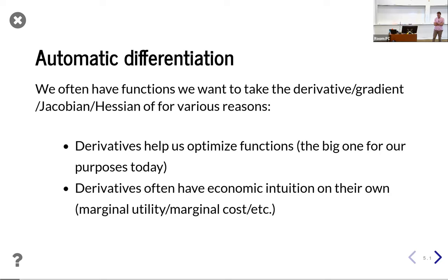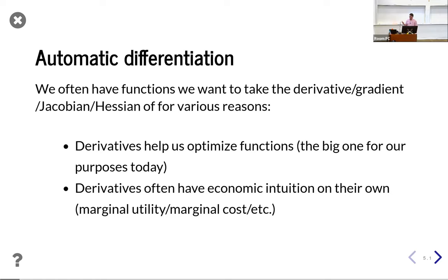Automatic differentiation is a tool for taking computational gradients, derivatives, Hessians, or whatever of various functions. This is really useful for a lot of reasons. The most obvious one for our purposes today is optimization — the classic way to optimize a smooth function is to take the derivative and check all the places where it's zero. Computationally, it's really handy to have your computer calculate those for you so you don't have to do the math yourself. You can also calculate derivatives of weird functions that might have an economic intuition.